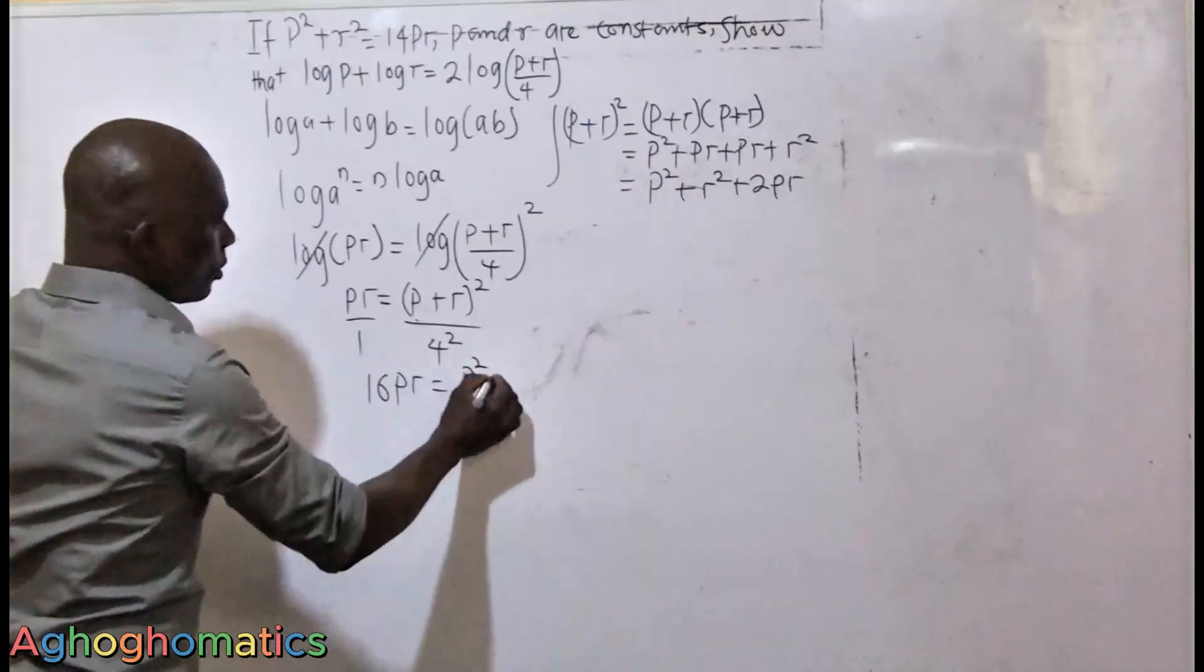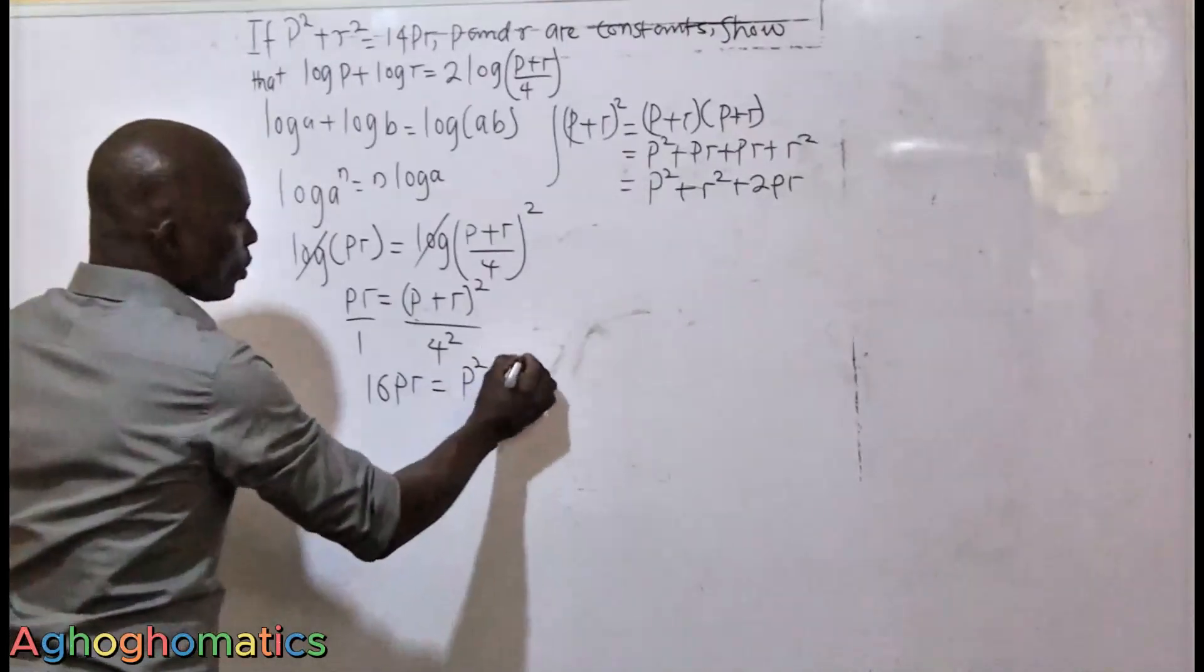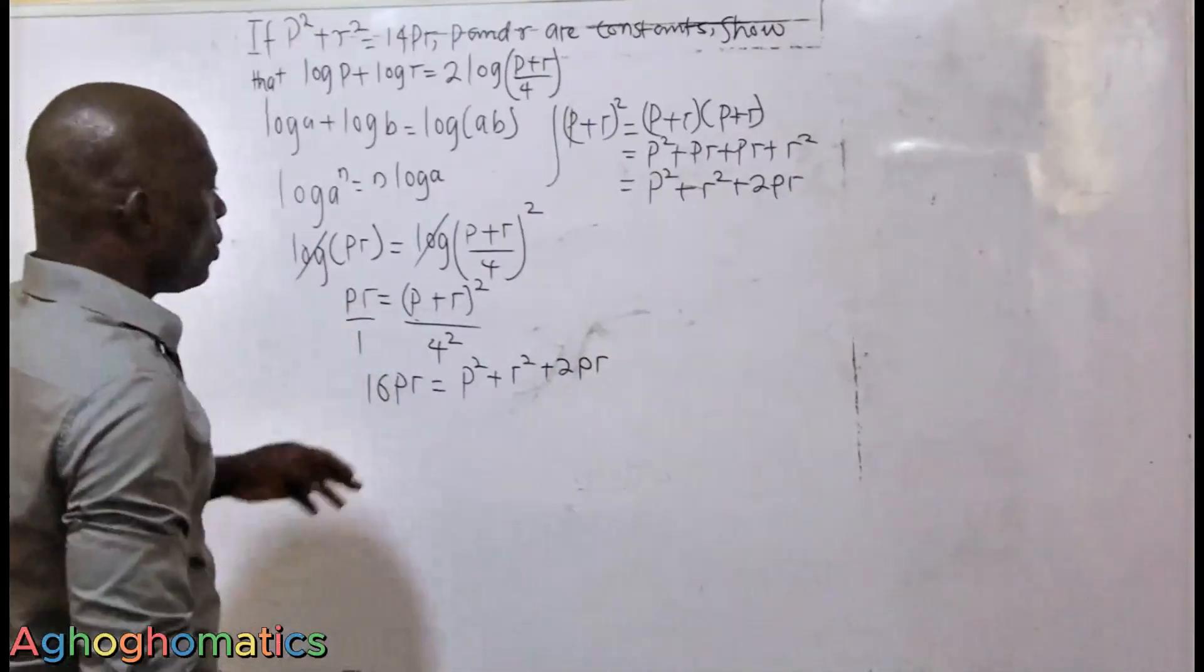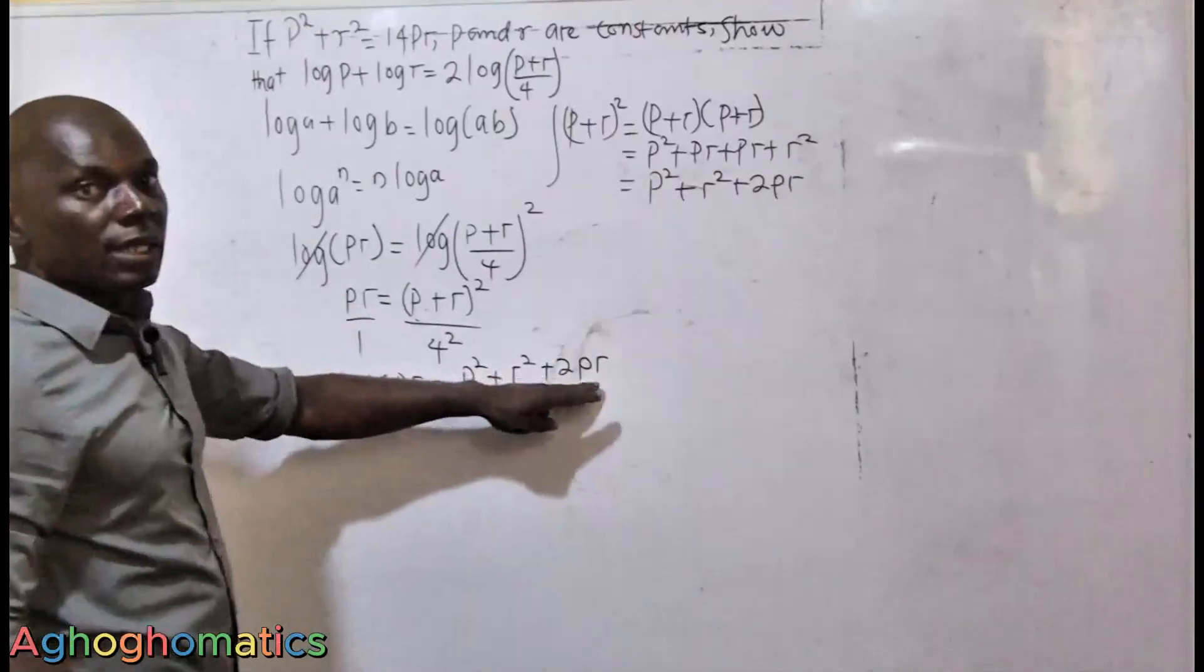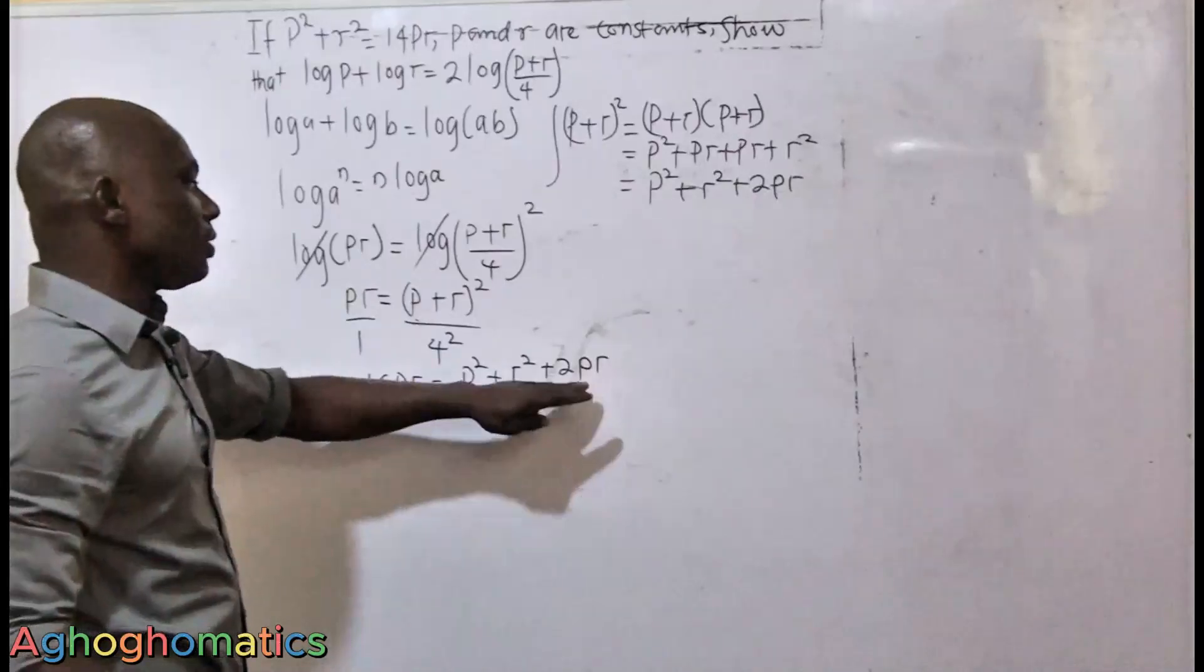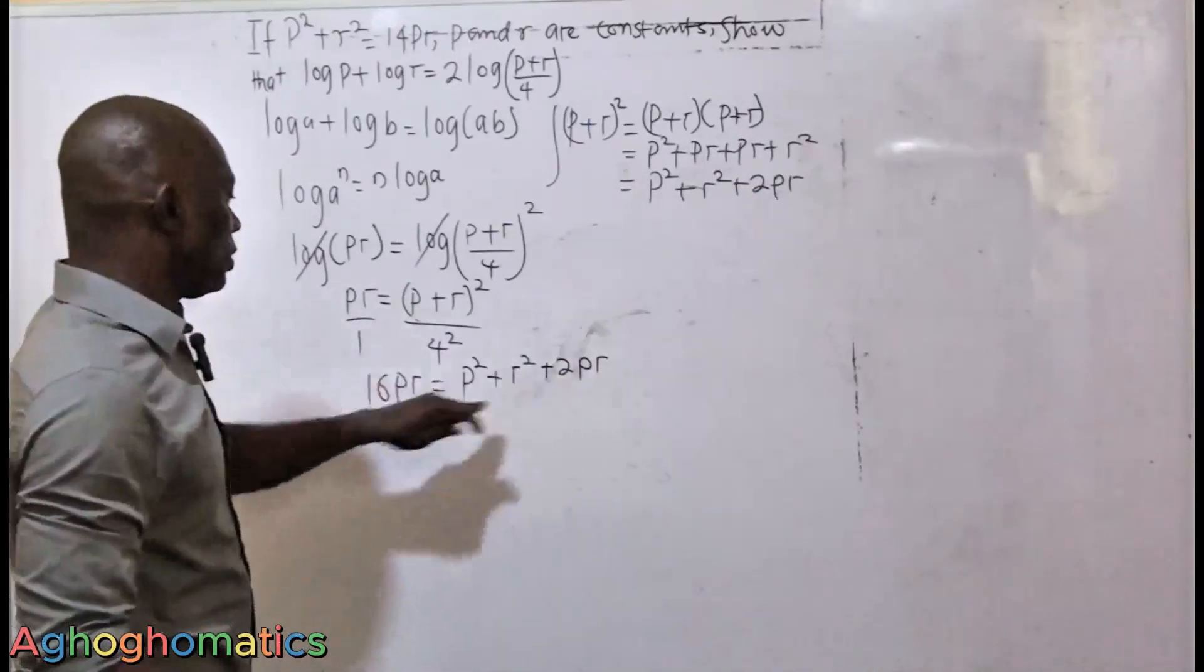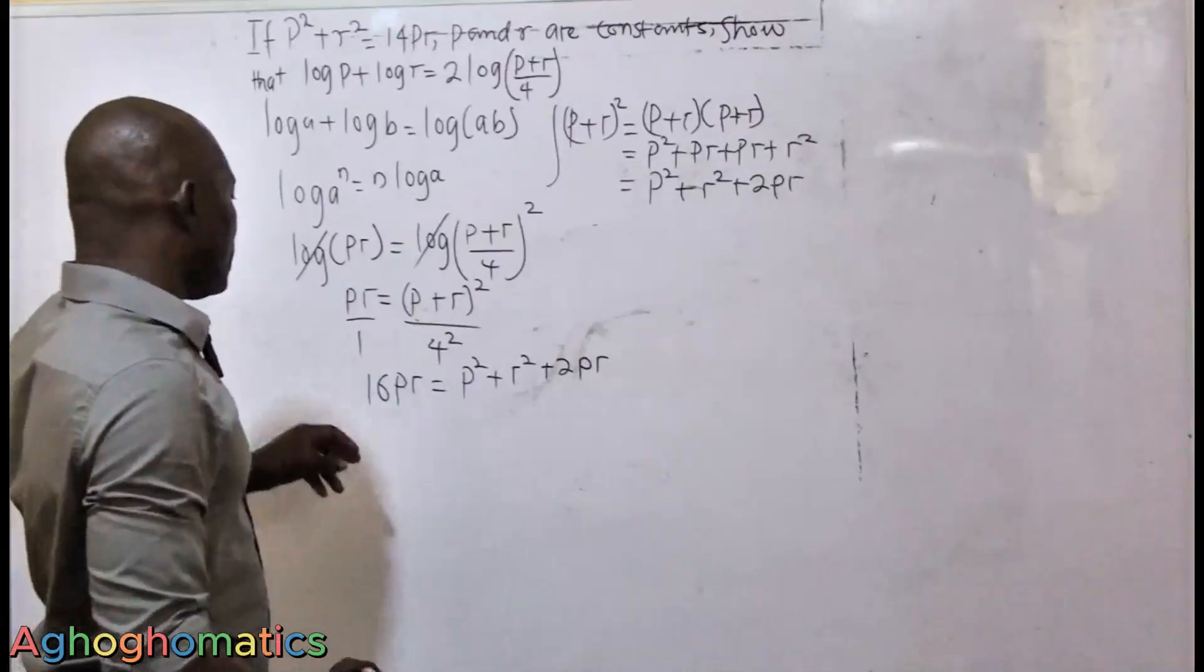Now all we need to do here is to look at this expression. Moving 2PR to the left-hand side, this becomes 16PR minus 2PR is equal to P squared plus R squared.